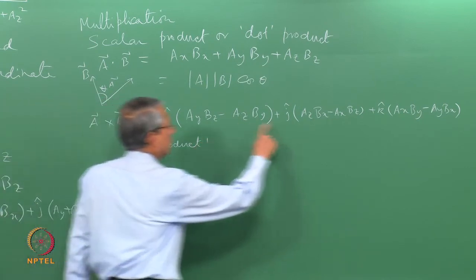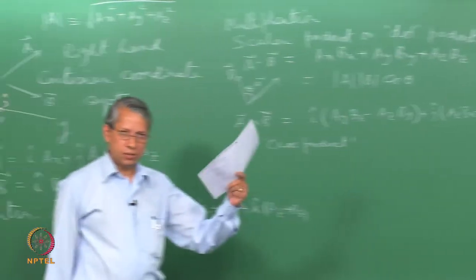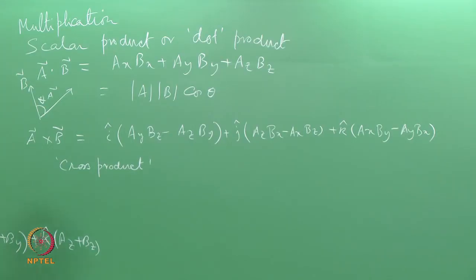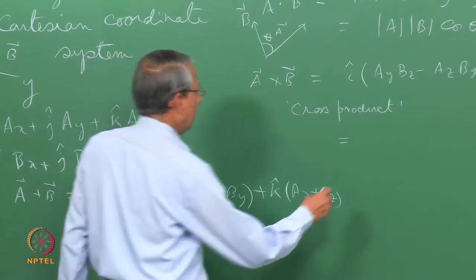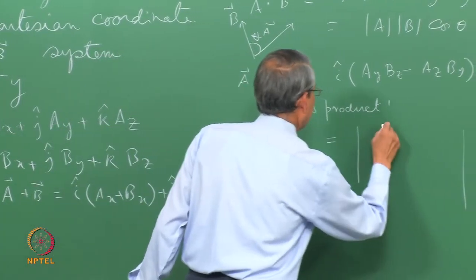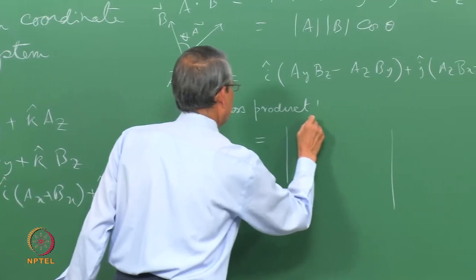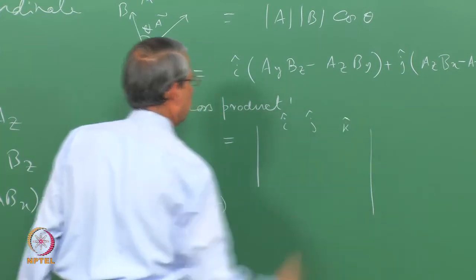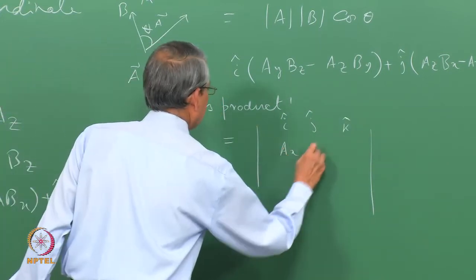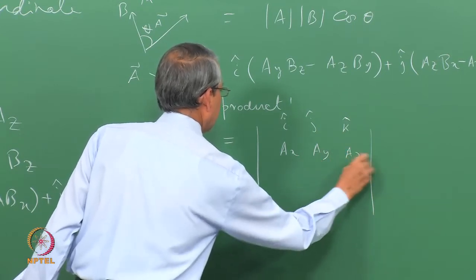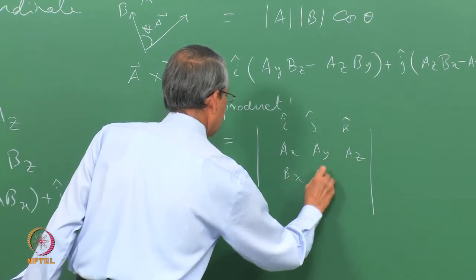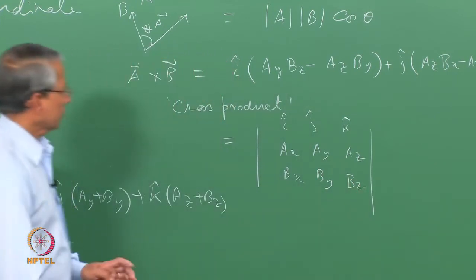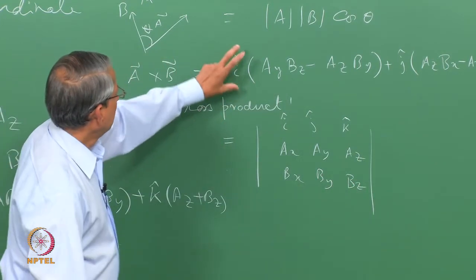It is somewhat difficult to remember the cross product formula, so we write it in determinant form: the 3×3 determinant with i, j, k in the first row; ax, ay, az in the second row; and bx, by, bz in the third row. If you expand this determinant, it will give the same expression as the cross product.